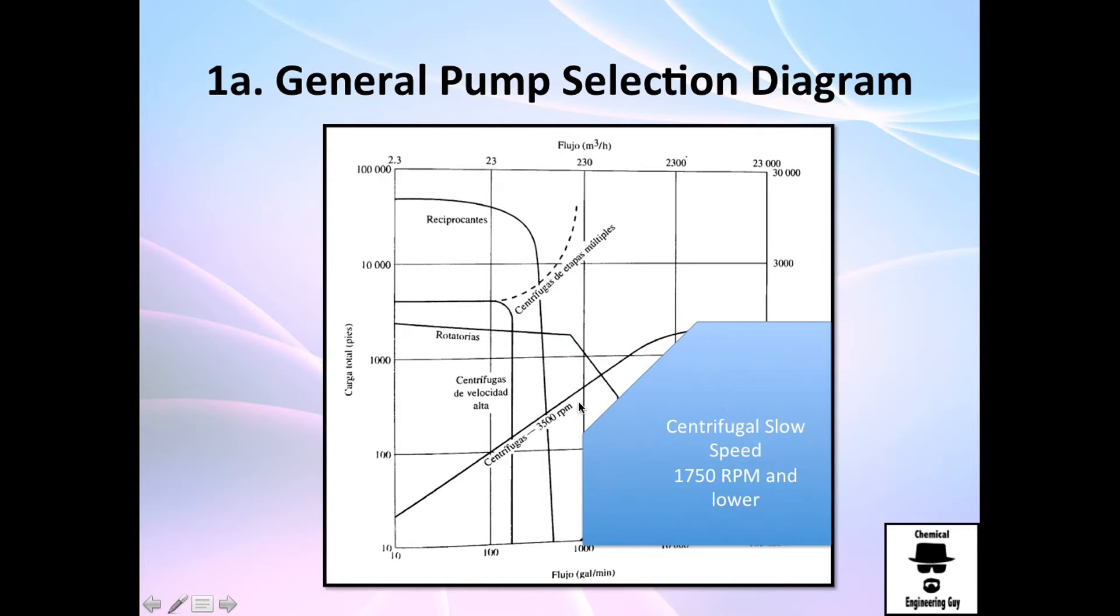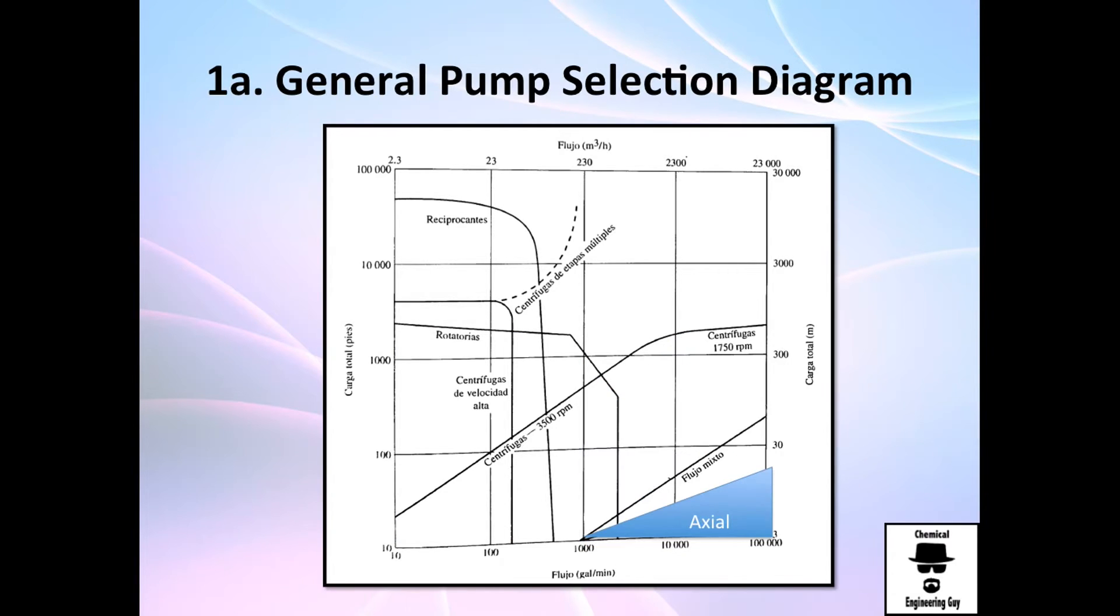Here goes the axial flow and the mixed flow. Axial flow—remember if you've seen section one—are the ones that are like two rings and they have many blades and so on.